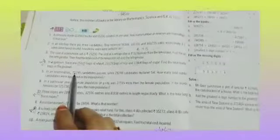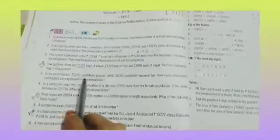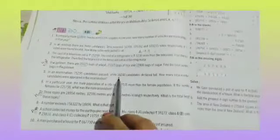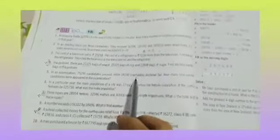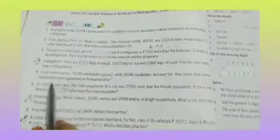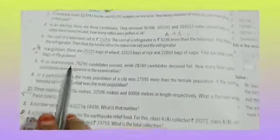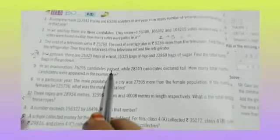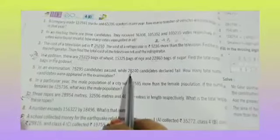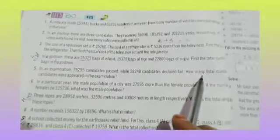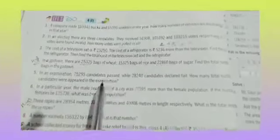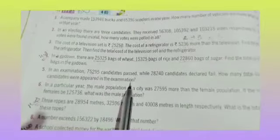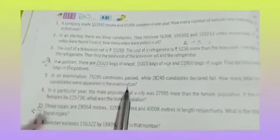In an examination, 75,295 candidates passed while 28,240 candidates were declared failed. How many total candidates appeared in the examination? There was an examination in which 75,295 candidates passed while 28,240 candidates failed. Now we have to tell how many candidates appeared in the examination.